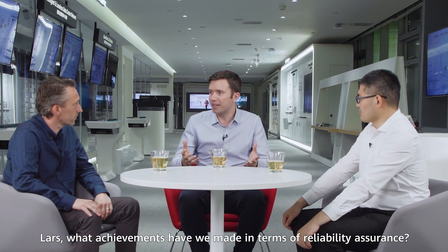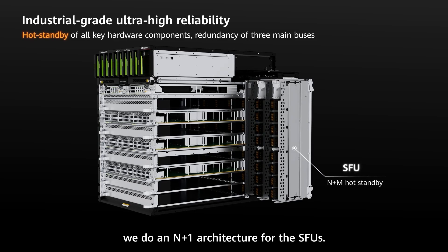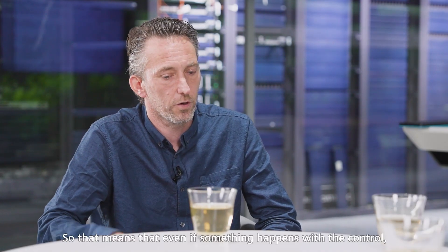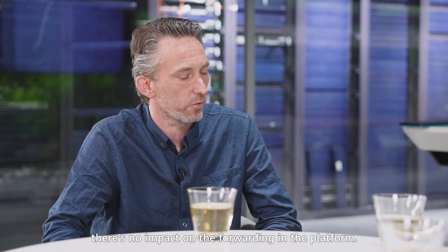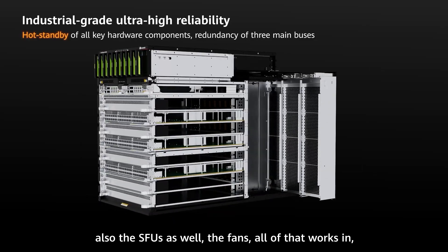Reliability is crucial to the campus core network. The orthogonal design enables redundancy in forwarding using SFUs in an N+1 architecture. Forwarding is also separated from control, meaning that even if a control failover occurs, there is no impact on forwarding in the platform. All other components — the main control board, SFUs, and fans — work in an active-standby model, so there is always a failover method available for any component.